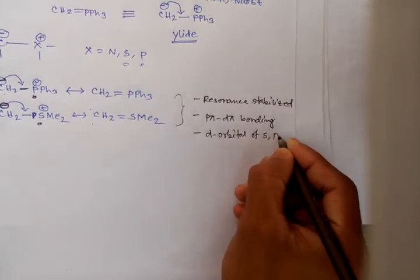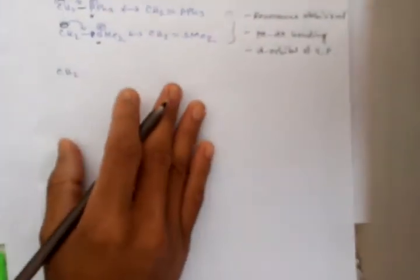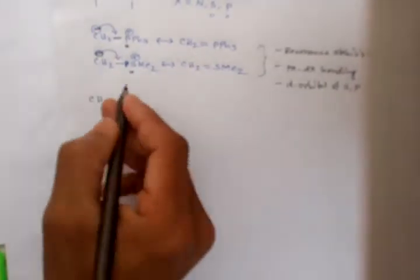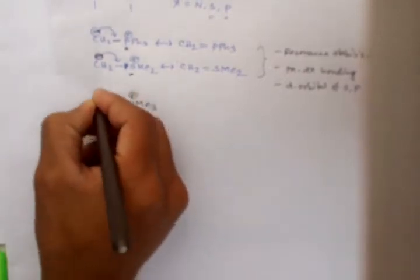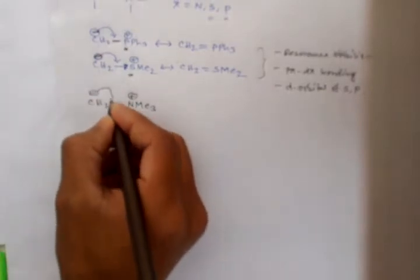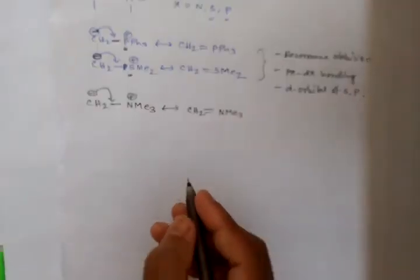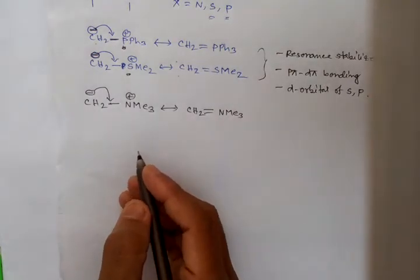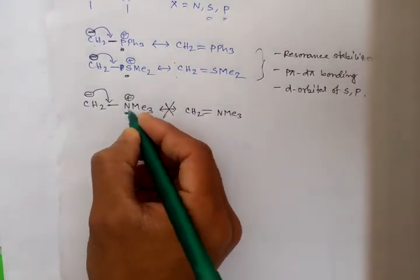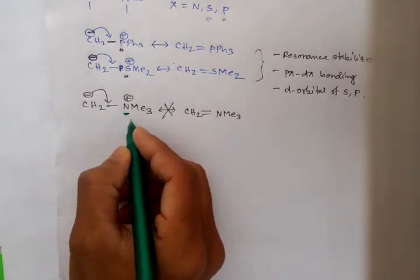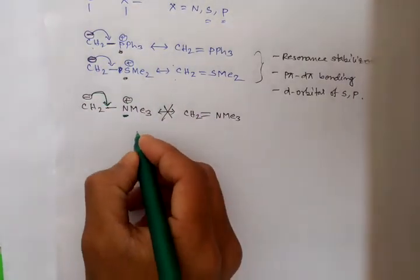But in case of nitrogen ylide, this is not possible. There are no d orbitals in nitrogen, so this type of conjugation is not possible. It is not resonance stabilized due to no d orbital on nitrogen atom.